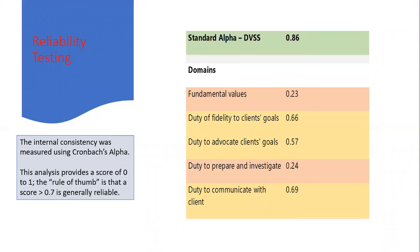There's a rule of thumb that any Cronbach's Alpha score above 0.7 means that the instrument is generally reliable. Overall, the Defender Values Spectrum Survey scored 0.86, which is above the 0.7 acceptability threshold, and we were very happy with that. However, when we looked at the five individual domains — the fundamental values and the four duties — those individual elements fell well short of the 0.7 rule of thumb, but we were happy that overall the instrument was working.